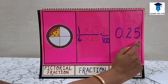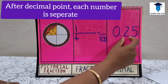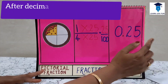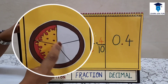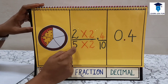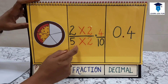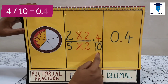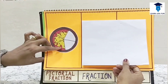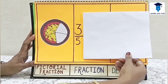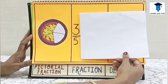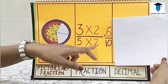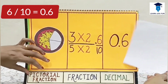Never say 'zero point twenty-five' — I am correcting you here. After the decimal point, each digit is individual and separate, so it is 0.2-5, not 'twenty-five'. Keep this in mind. Now, out of 5 pieces, 2 pieces are left: fraction is 2 upon 5. The nearest multiple of 10 is 5 × 2 = 10, giving equivalent fraction 4 upon 10, so the decimal form is 0.4. Out of 5 pieces, 3 are left: fraction is 3 upon 5. Since 5 × 2 = 10, we get 6 upon 10, so the decimal form is 0.6.